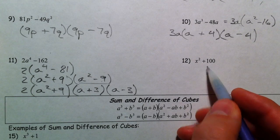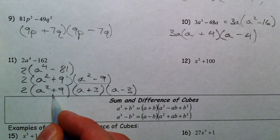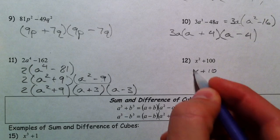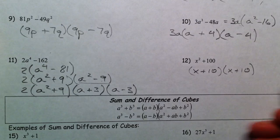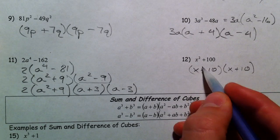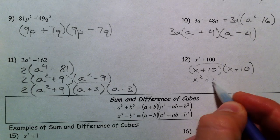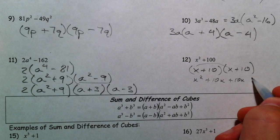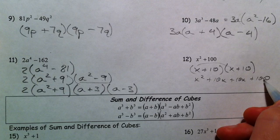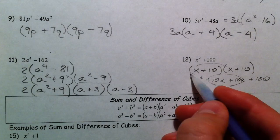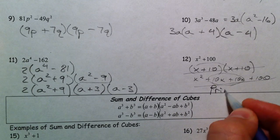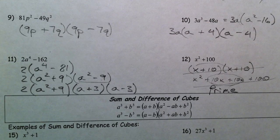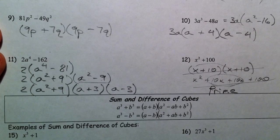So x²+100: many of you would try to make this (x+10)(x+10). That's very wrong. Because if you multiply that out, you get x², then +10x, then another +10x, and +100. You do get your +100, but that extra middle term is not supposed to be there. So that one is just prime — it doesn't factor. And that covers perfect square trinomials and the difference of squares.